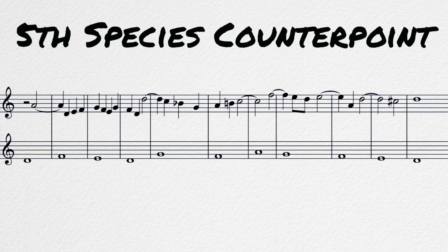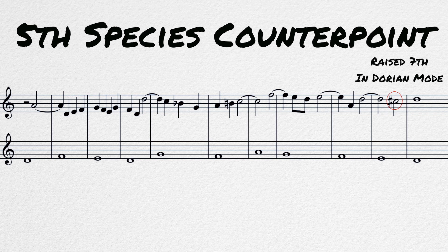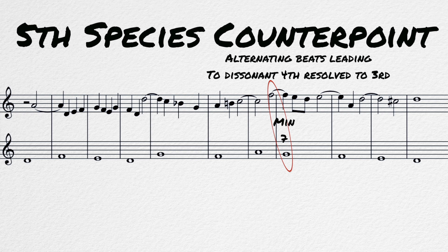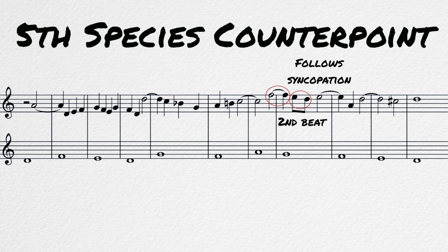Fifth species counterpoint. The fifth species is a combination of everything we've learned so far, with a little more rhythmic variation allowed. We see the raised leading tone we went over in the first species, the offbeat dissonance we saw in the second and third species, and the suspension principles of the fourth species, with a few sevenths resolving down to the sixths. We also have some ornamentation that can be used in place of stepwise motion. These are usually used on the second and fourth beats and are generally used after syncopations.